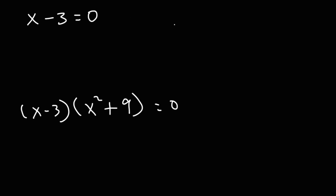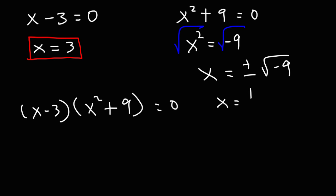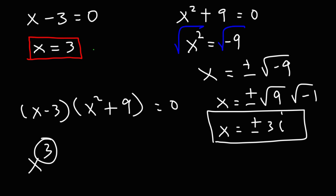Now let's set each factor equal to 0. For (x minus 3), we add 3 to both sides and get the solution x is equal to 3. For (x squared plus 9), we subtract both sides by 9 to get x squared is equal to negative 9. Taking the square root of both sides, x is equal to plus or minus the square root of negative 9, which breaks into the square root of 9 times the square root of negative 1. The square root of 9 is 3, and the square root of negative 1 is i. So we have a total of 3 solutions: 1 real solution and 2 imaginary solutions.